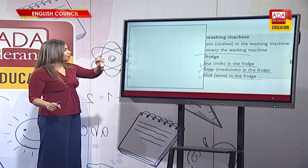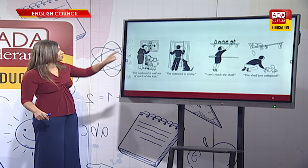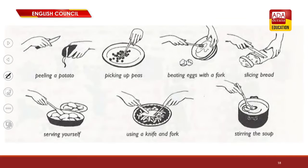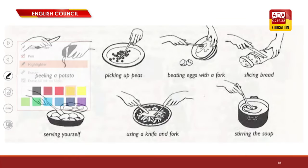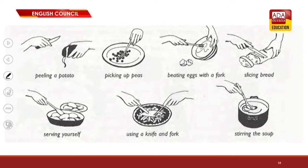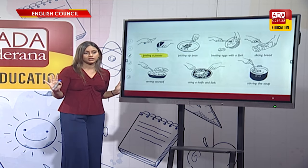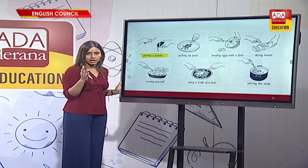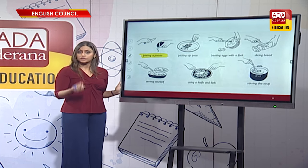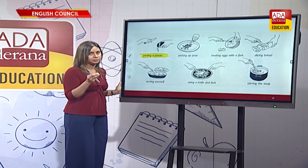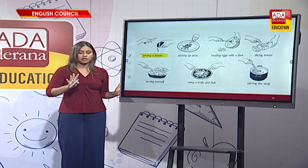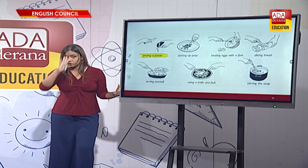Let's look at some other verbs you can use in the kitchen. I have beautiful pictures — look at the screen. First you have peeling a potato. When you are cooking, there are collocations that you use. I learned a lot of collocations through reading blogs and recipes from the internet. I never go for just a single recipe.